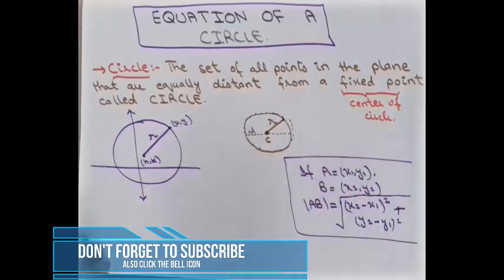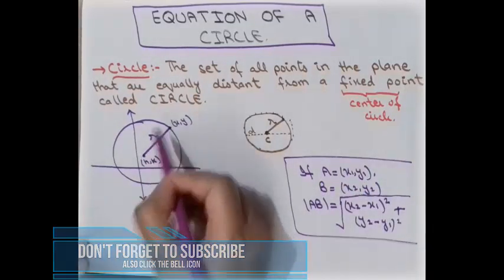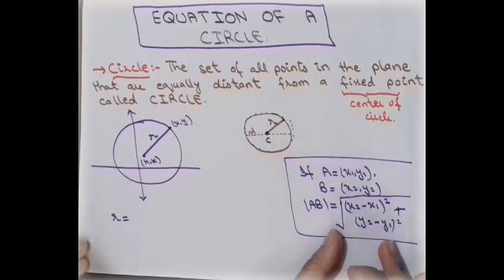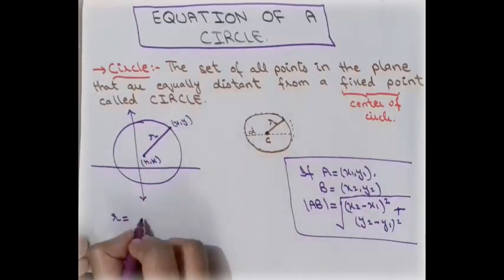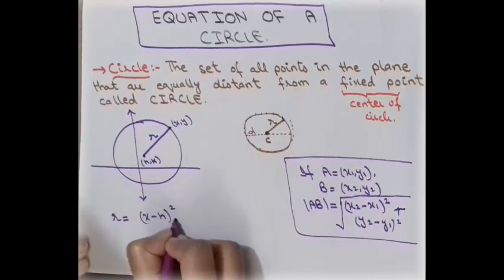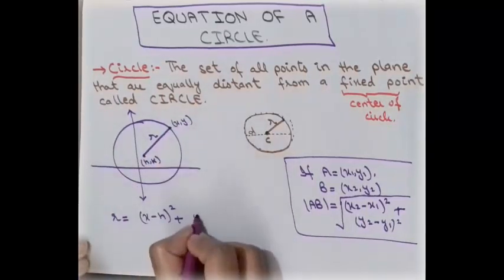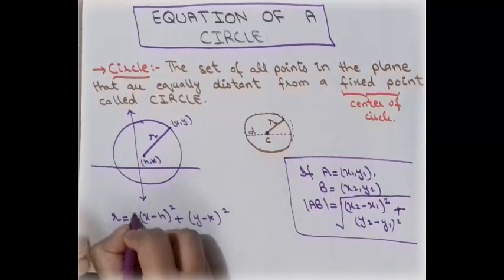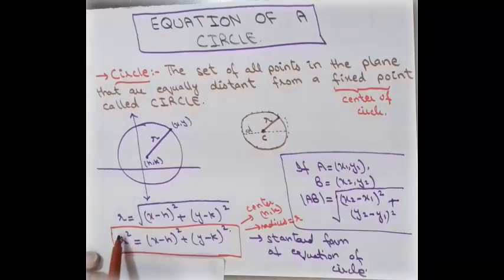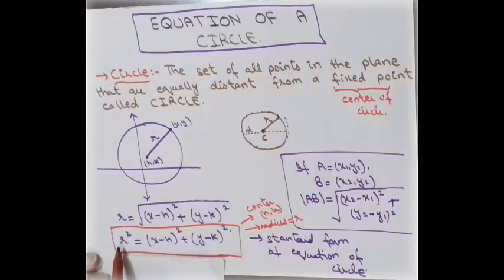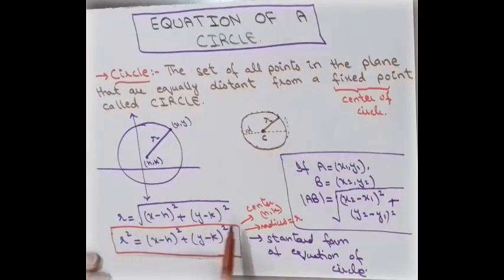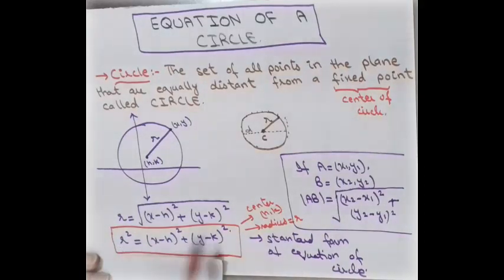Using this distance formula, the distance is r, so we get: r = √[(x − h)² + (y − k)²]. Squaring both sides to eliminate the square root gives r² = (x − h)² + (y − k)². This is called the standard form of the equation of a circle with center (h, k) and radius r.